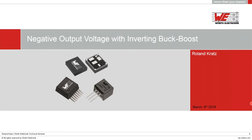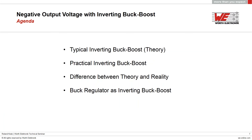Welcome to the webinar on negative output voltage with an inverting buck-boost. With an inverting buck-boost we can create a negative voltage from a positive supply voltage. The absolute value of the negative voltage can be higher or lower than the supply voltage, so the name inverting buck-boost describes its function very well. In the next 30 minutes we will take a deeper look into this topology, with the target of showing that a buck regulator can be used to create an inverting buck-boost and which important considerations to take care of.